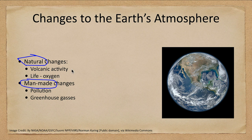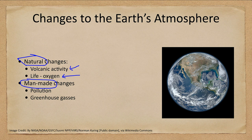Both of these do occur. Volcanic activity spews material into the atmosphere, changing it. In fact, our atmosphere changed from its original composition to what it currently is partly because life, just by existing, created oxygen in the atmosphere. And of course we have man-made things like pollution and greenhouse gases which also affect our atmosphere.